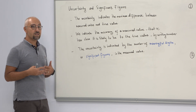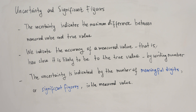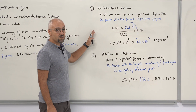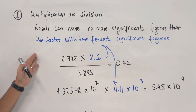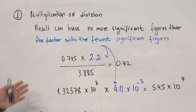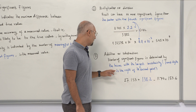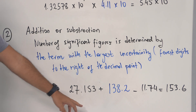Since we discussed the physical system, we are going to quantify uncertainty and significant figures in measurement. The uncertainty indicates the maximum difference between the measured value and the true value. We indicate the accuracy of the measured value by how close our measurement is to the true value. Uncertainty is indicated by the number of meaningful digits, also called significant figures. For multiplication and division, the result has no more significant figures than the factor with the fewest significant figures. For addition and subtraction, the result has the fewest digits to the right of the decimal point, indicated by the blue point.